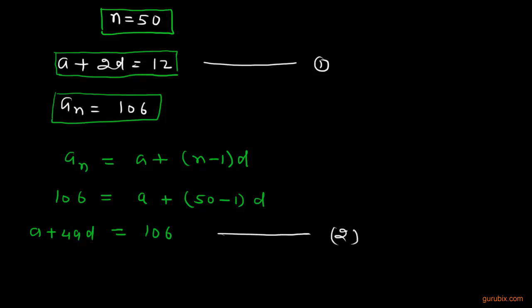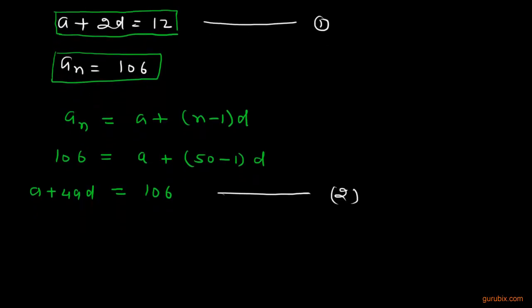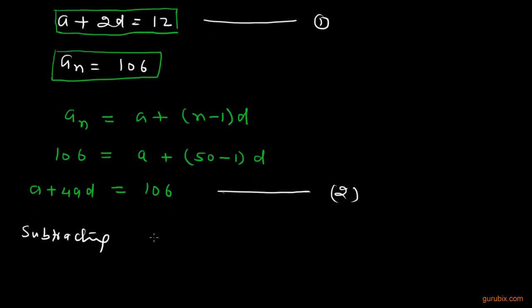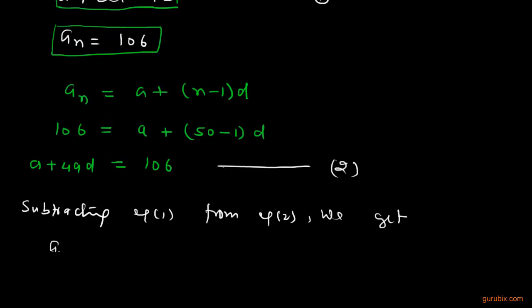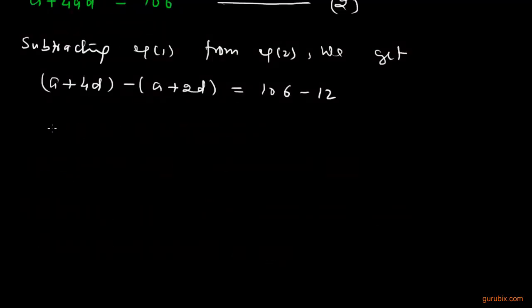Now we shall solve these two equations to find the value of A and D. We shall subtract equation 1 from equation 2. We get A plus 49D minus (A plus 2D), and here we subtract 12 from 106.